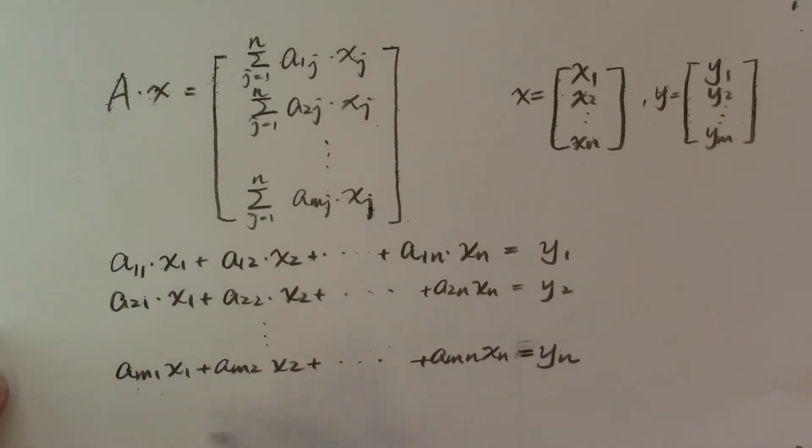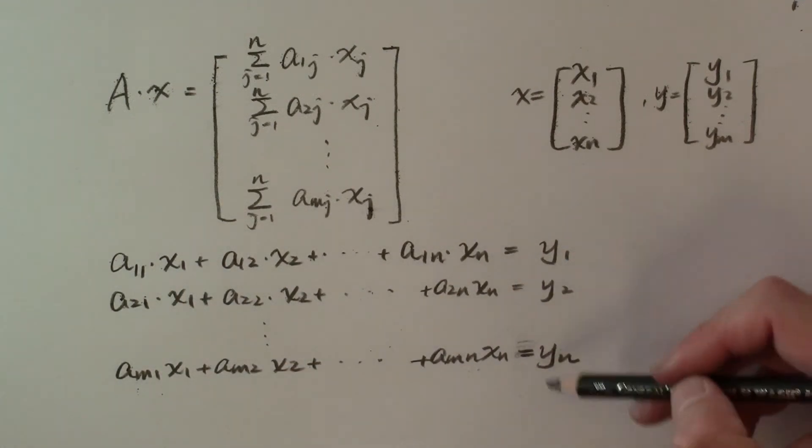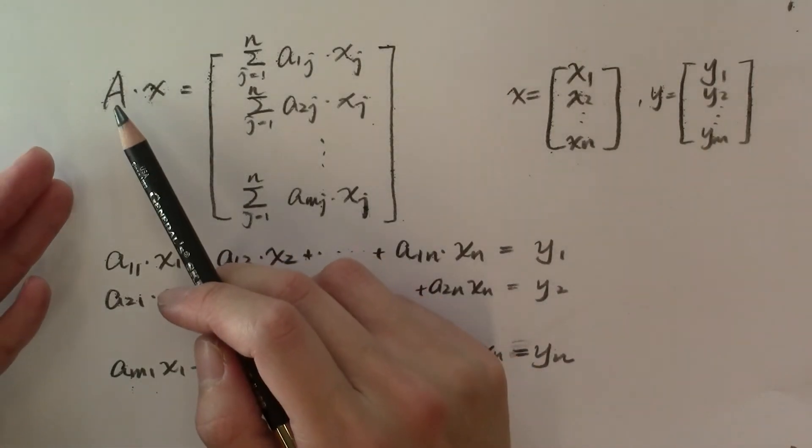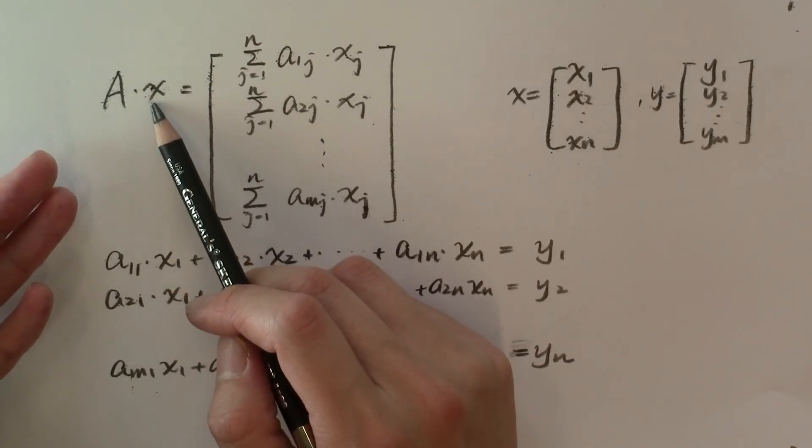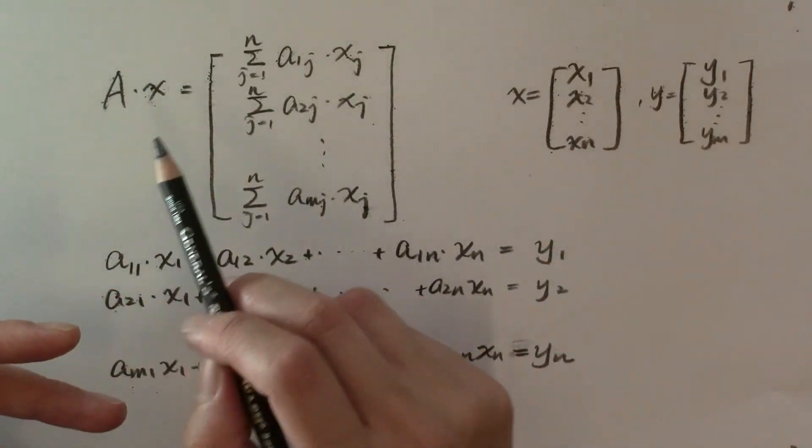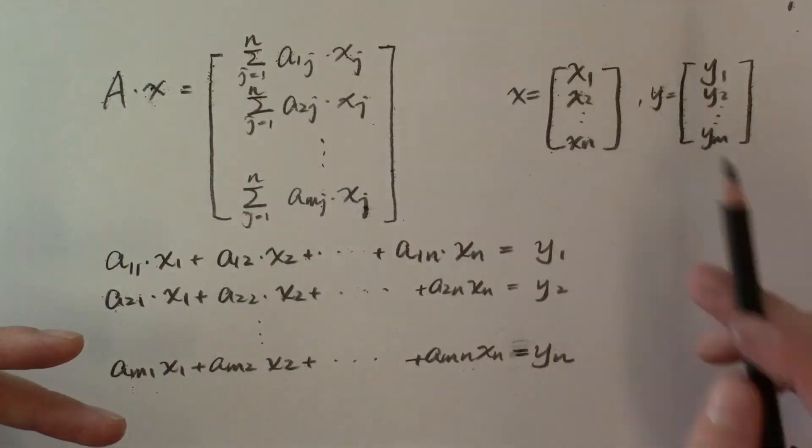Doesn't this also look very familiar? You're right, it is an m by n linear system about x if the right hand side is y. And therefore, the multiplication between a matrix A and a vector x is defined in such a way to describe a linear relationship between the vector x and the product y.